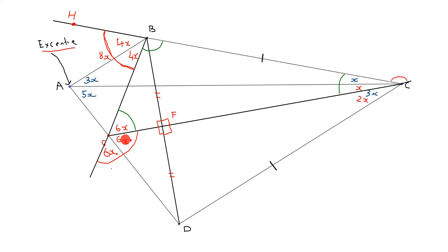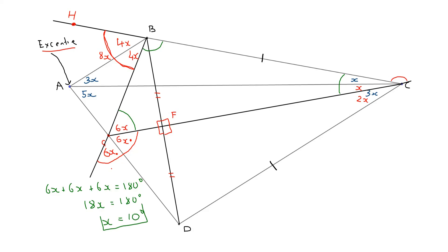Now if I look at these three 6x angles on a straight line: 6x plus 6x plus 6x equals 180 degrees. So 18x equals 180 degrees, and x equals 10 degrees. There we go — a solution using no trigonometry. Thank you very much for watching.